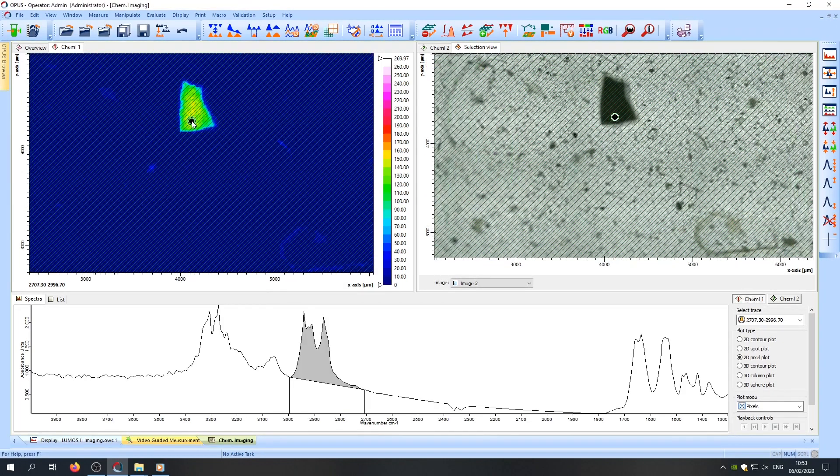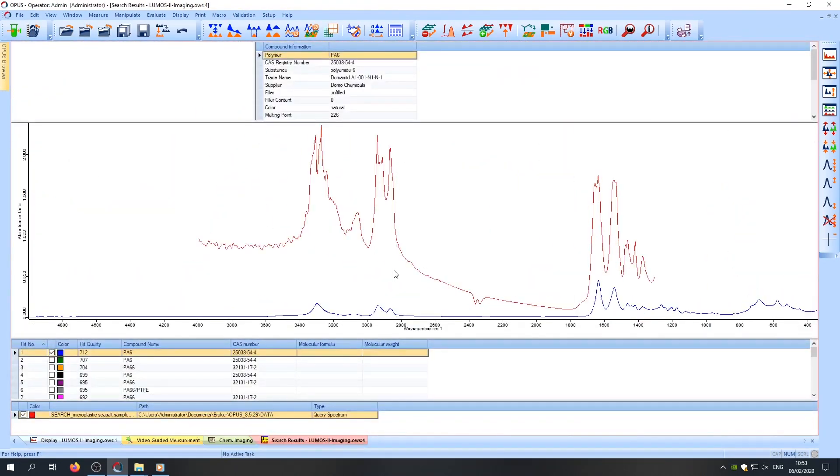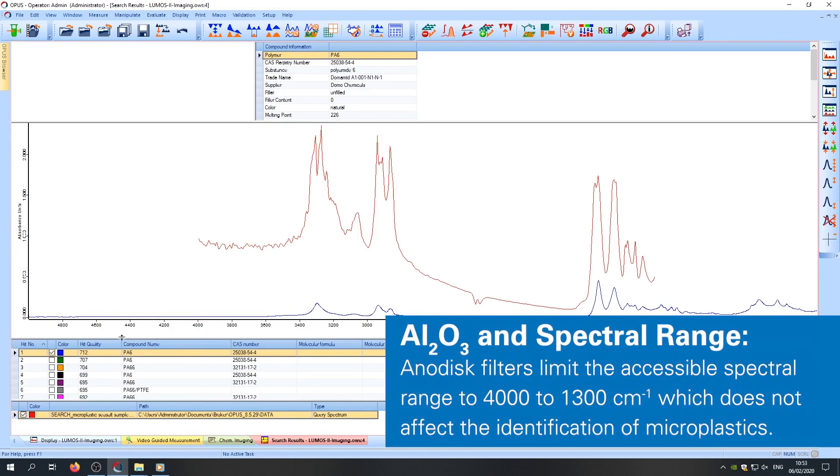Just by clicking on the particle, we are shown the corresponding spectrum and if we want to identify the particle, we just perform a library search. The suggested identity of the particle is displayed here and in this case, we can be sure that it's polyamide.